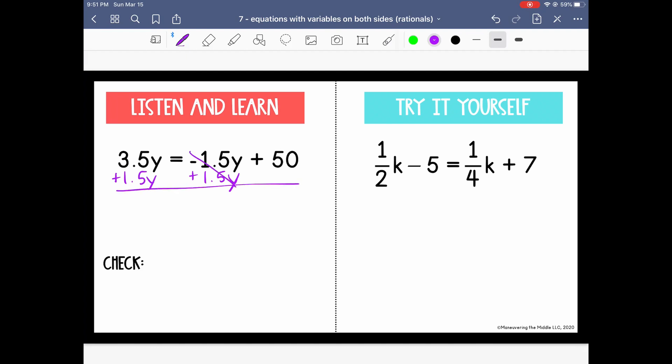So now I've canceled them from the right, and I have 5y equals 50. So let's undo the multiplication, divide both sides by 5, and I know now that y equals 10.